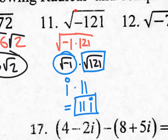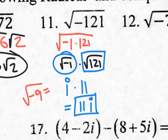Let me show you how easy this is. If it's a perfect square number and there's a negative in front, just take the square root and put an i on it. The square root of negative 121 is 11i. The square root of negative 9 is just 3i. The square root of negative 25 is just 5i. That's simple.